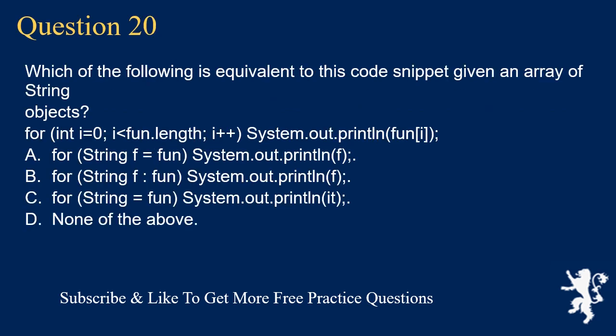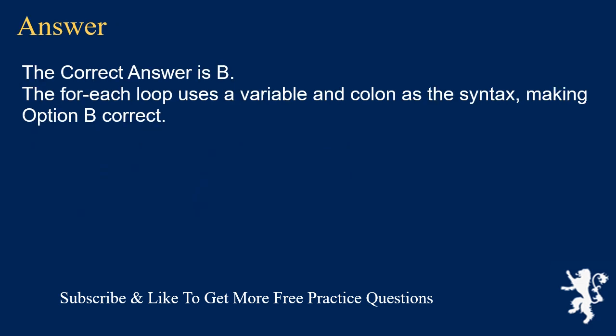Question 20. Which of the following is equivalent to this code snippet given an array of string objects? for (int i = 0; i < fun.length; i++) { System.out.println(fun[i]); } A. for (String f = fun) { System.out.println(f); } B. for (String f : fun) { System.out.println(f); } C. for (String : fun) { System.out.println(); } D. None of the above. The correct answer is B. The for-each loop uses a variable and colon as the syntax, making option B correct.